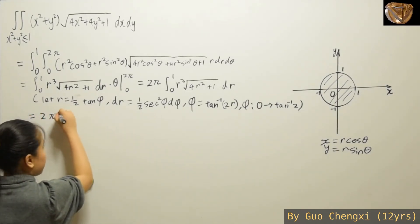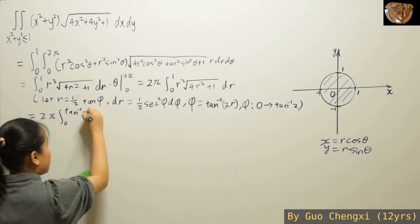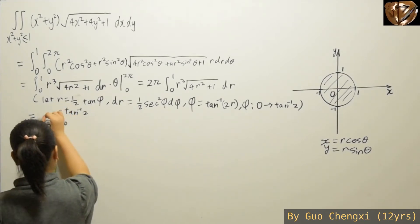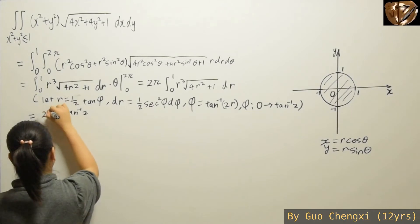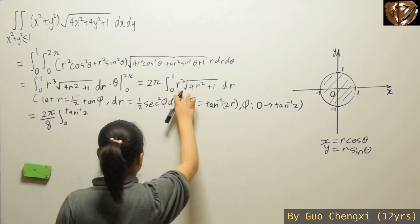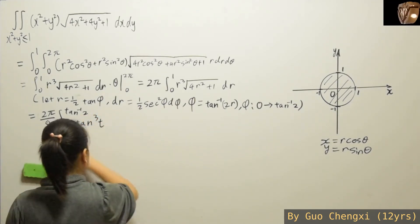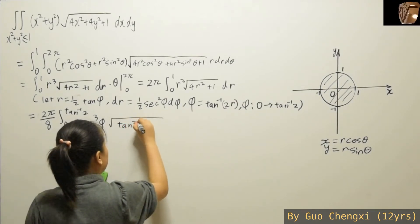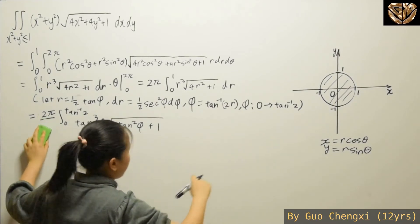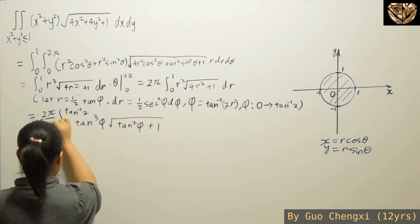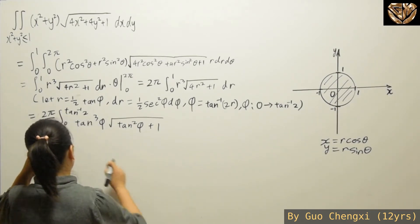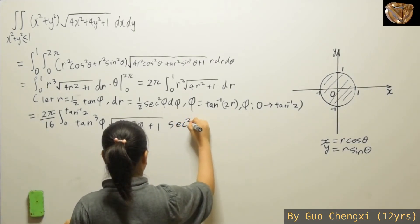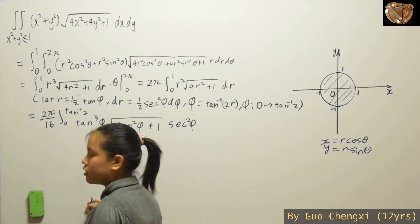Substituting inside, the r integral goes from 0 to arctan(2). For this part you get a factor of ½. The r³ term becomes (½·tan(φ))³ = tan³(φ)/8. There's also the term tan²φ + 1 from the square root, and adding the dr contributes another ½, making the coefficient 1/16. Simplifying this part gives π/8 as a factor out front.